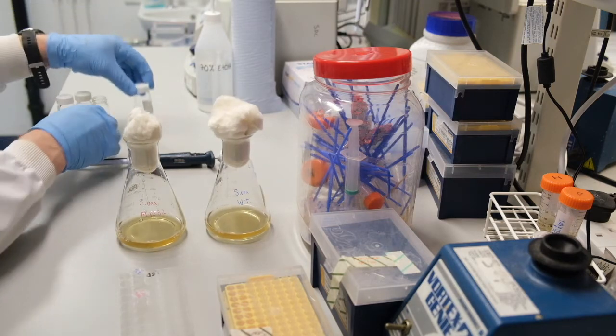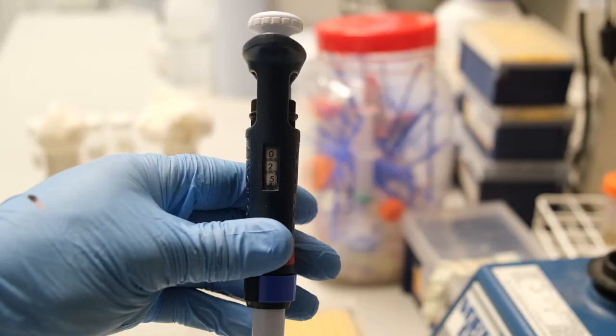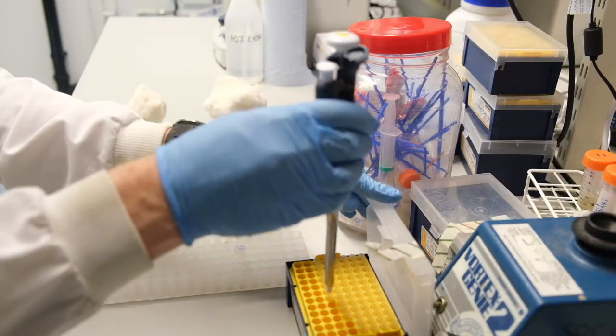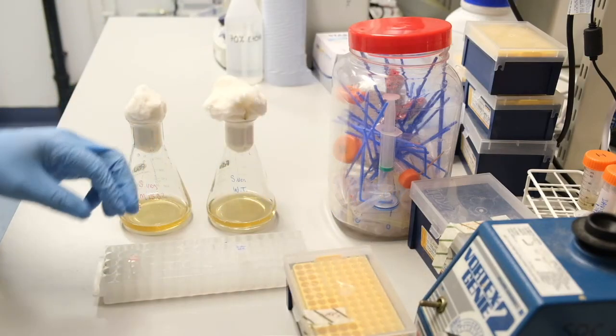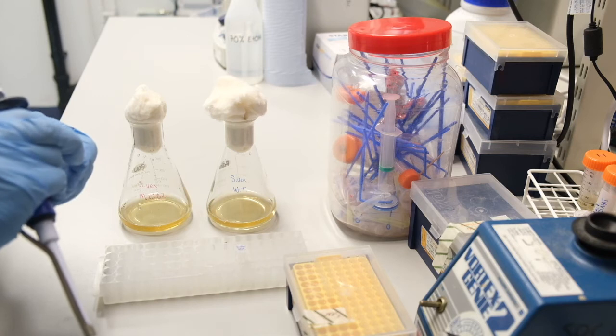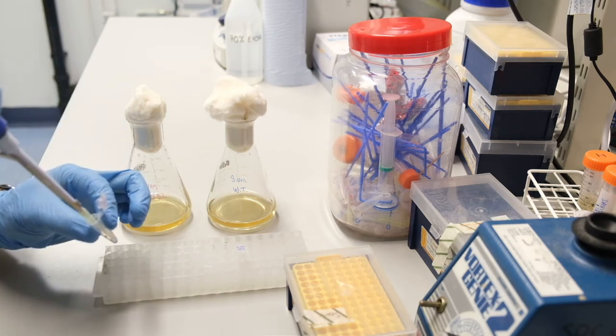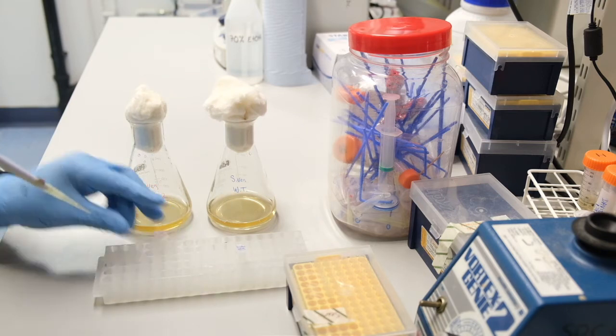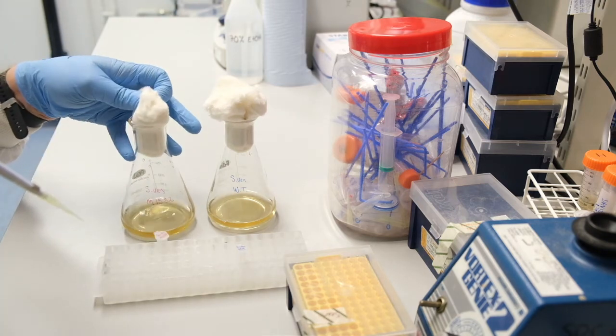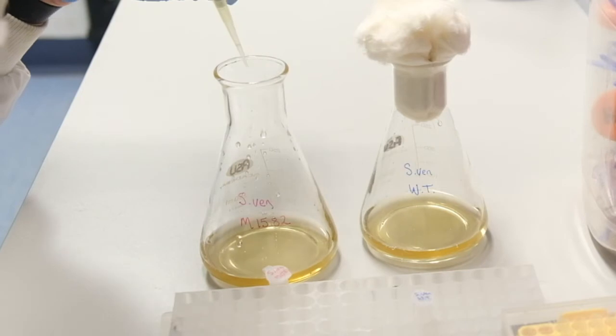I inoculate both cultures with 25 microliters of spore suspension using my original frozen spore stocks. Alternatively, I could have inoculated these cultures with our freshly prepared spore suspensions, or indeed I could have used a single colony from our nutrient agar plates.